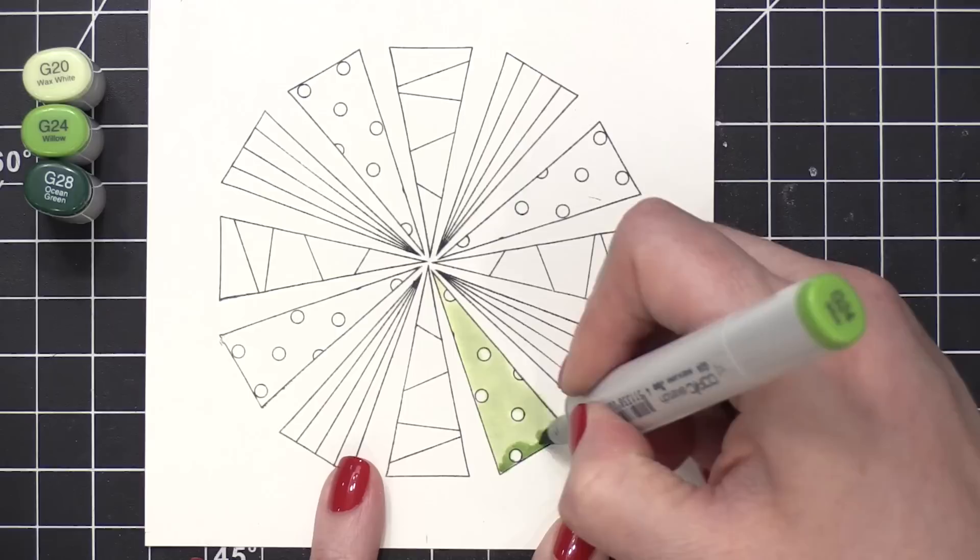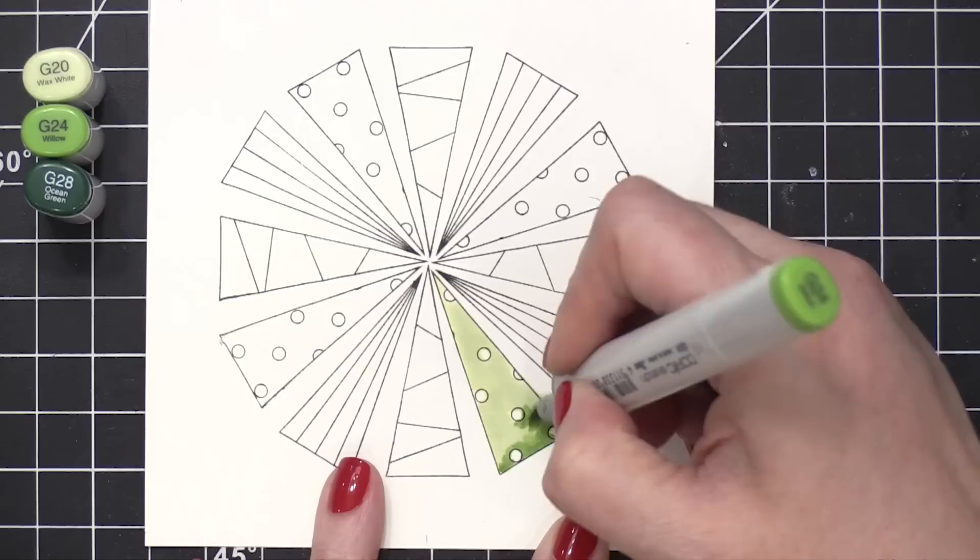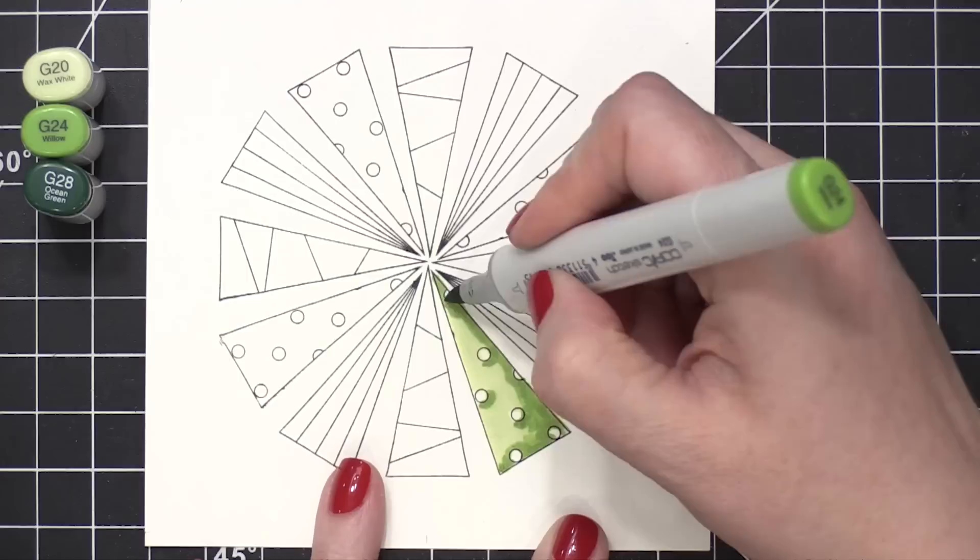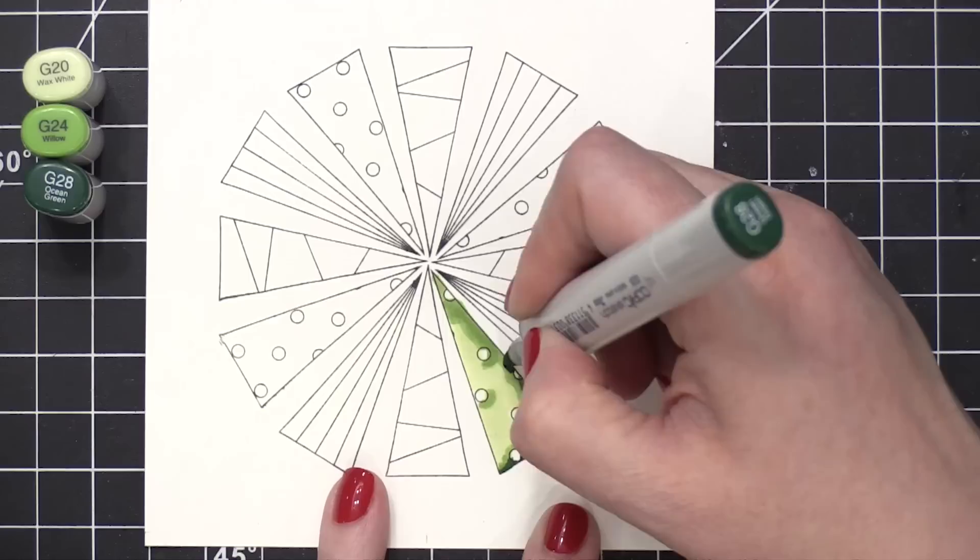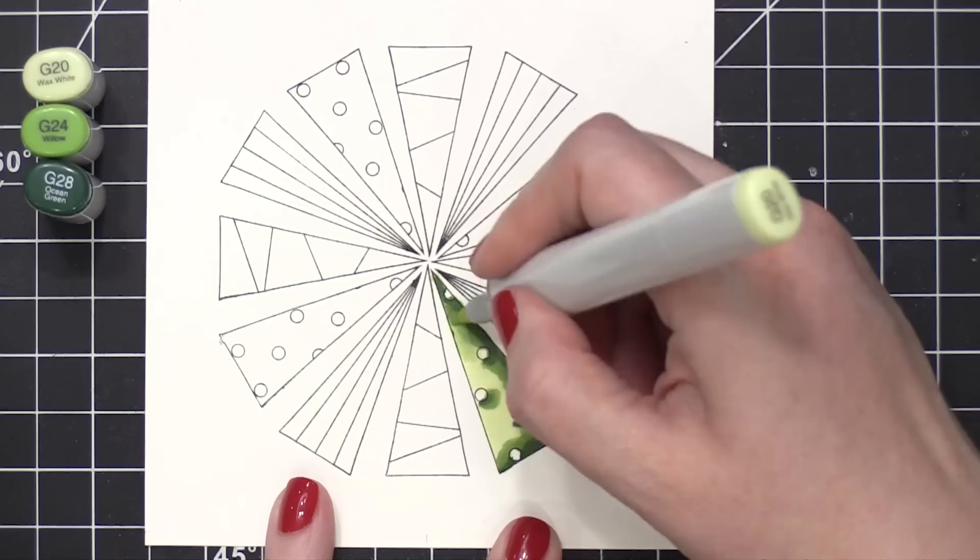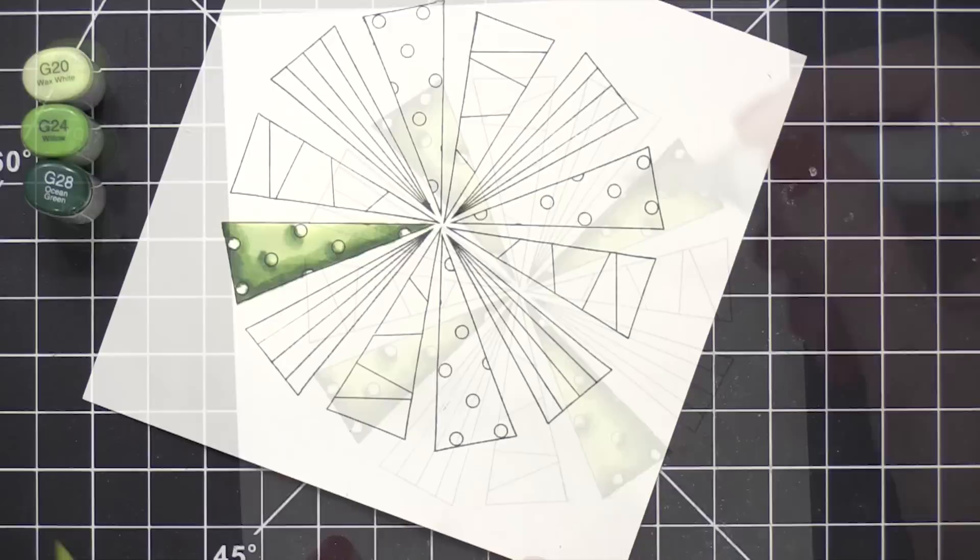For this color scheme, I started out with G20 and I just coated the entire green area of the tree. I then brought in G24 and added that color where there would be shading. I then grabbed the darkest color, which is G28, and added that over that same shaded area. I then reversed the order of my markers and went back to G24 and then back to G20.